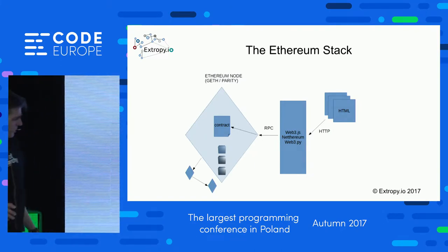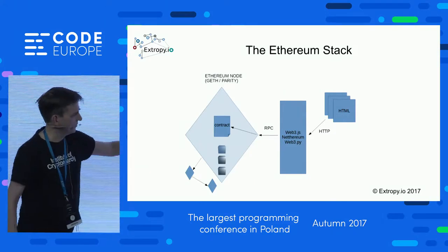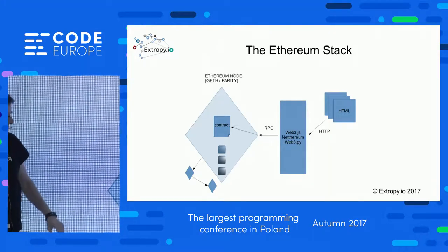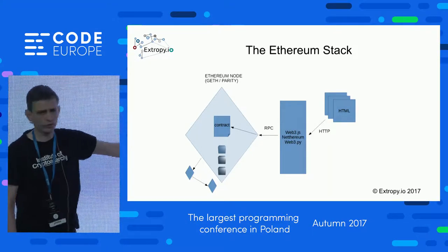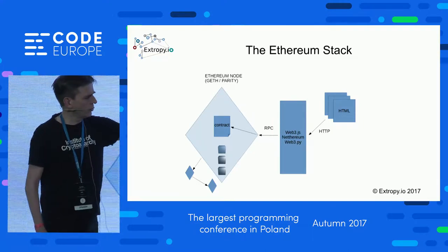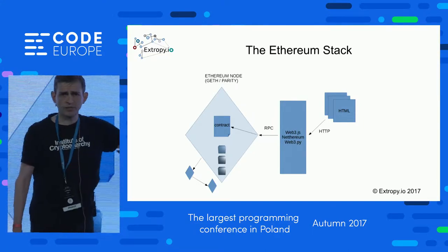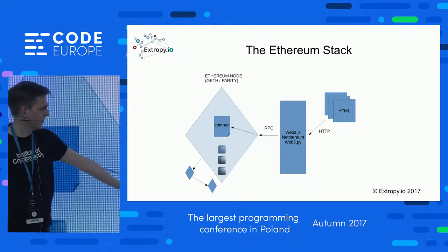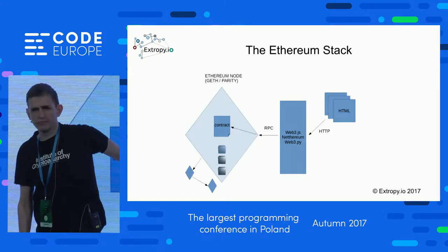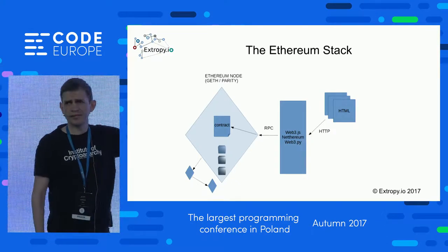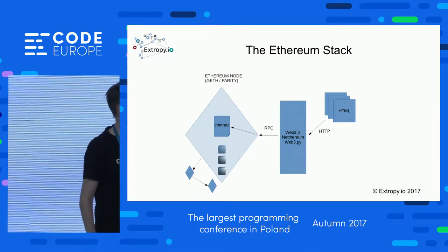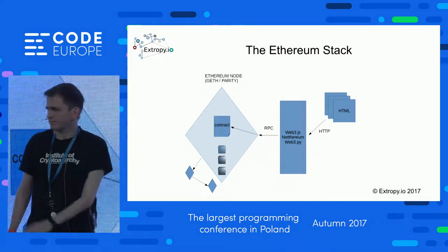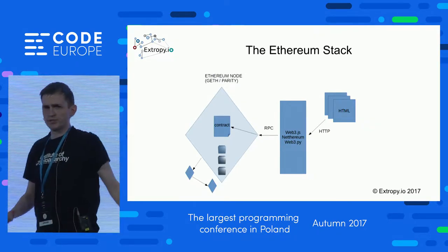The typical Ethereum stack: a node runs software like geth or parity, has all the blocks and all the contracts. You can call this from JavaScript libraries — Web3.js for JavaScript, Nethereum for .NET, and some Python libraries. They connect to the node via remote procedure calls over HTTP. Because you've got JavaScript libraries, you can call them from HTML. That's the typical stack people use.